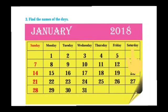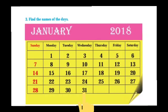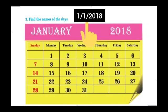Saturday is the last day of the week. The calendar shows dates from 1 to 31. These numbers are the dates in the calendar. Dates in English are called 'dates'. We read them in Marathi as 'ek January do hajar aathara', but how do we read them in English?